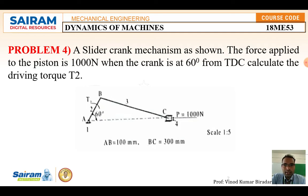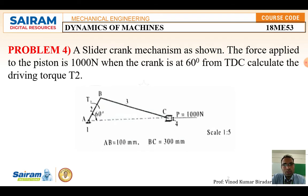I will read the fourth problem. A slider crank mechanism as shown in the diagram — the force applied to the piston is 1000 Newton when the crank is at 60 degrees from the top dead center. Calculate the driving torque T2. Here AB is given as 100 mm, BC is given as 300 mm, and one external force P equals 1000 Newton is applied on the piston.